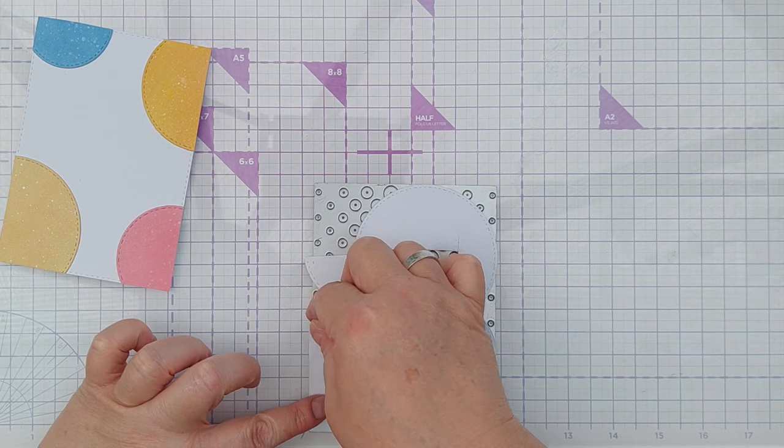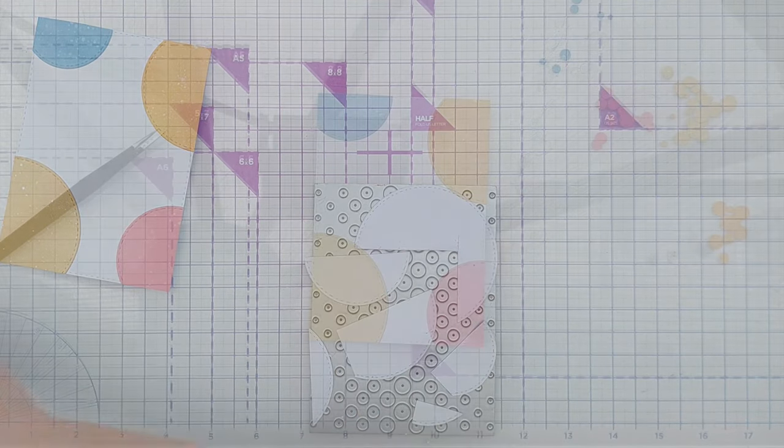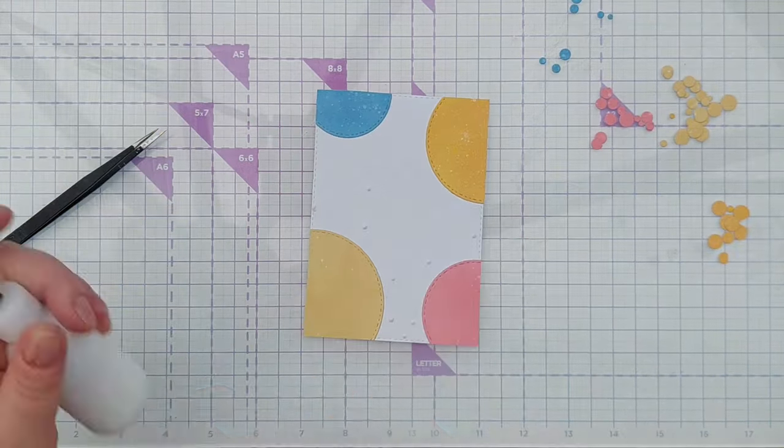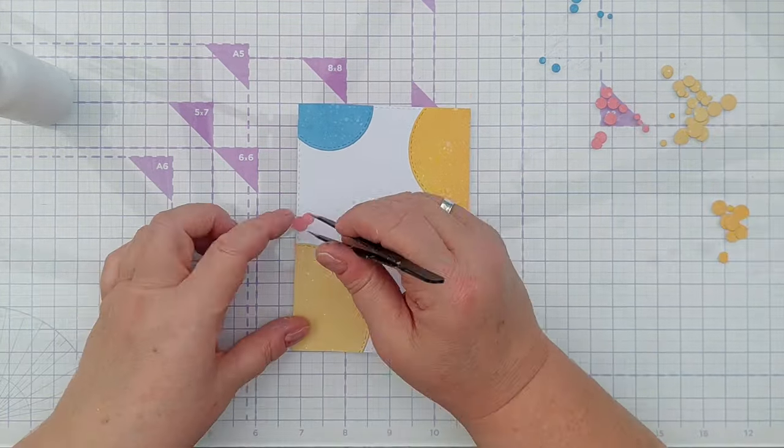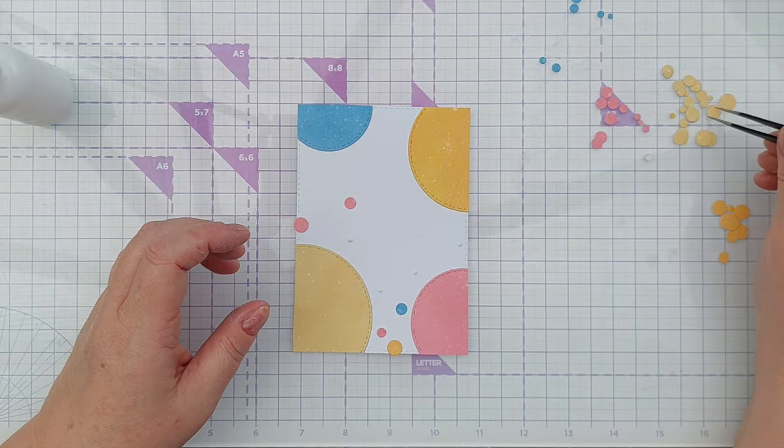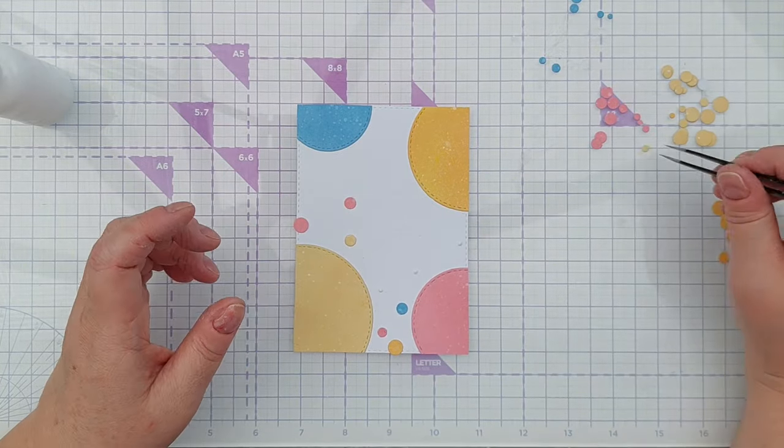To stick down my little circles I used matte gel medium. I chose this because it's matte and if it's squished out from beneath the circles it would dry without leaving any glossy smears on my card front.